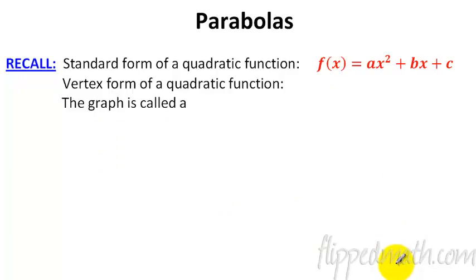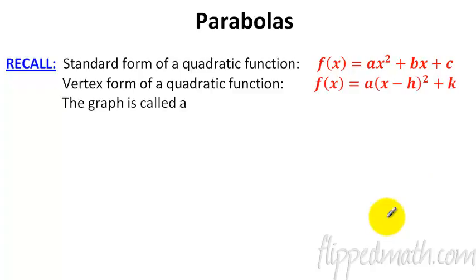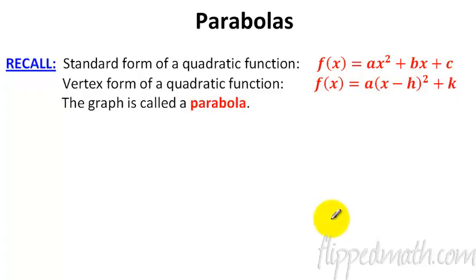Next is a reminder on what we've studied so far this year dealing with parabolas. First thing is we did standard form - ax squared plus bx plus c. Hopefully you're remembering that. Then there was also vertex form, which is really nice when we're having to graph it. You just have a vertex at h and k and your quantity x squared there. And the graph is called a parabola.